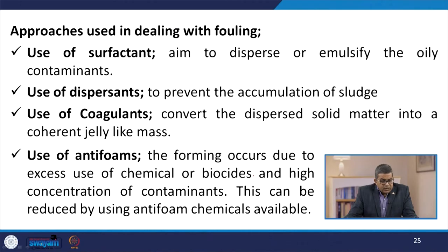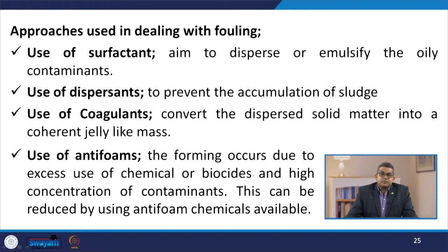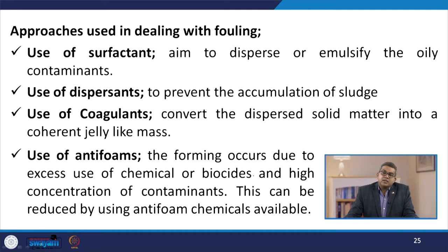There are various approaches to dealing with fouling. One may use surfactants — the aim is to disperse or emulsify oily contaminants. Another approach is the use of dispersants to prevent the accumulation of different types of sludge. Then there is the use of coagulants, which may convert dispersed solid matter into a coherent jelly-like mass. Anti-foams may also be used — foaming occurs due to excess use of chemicals or biocides and high concentration of contaminants, and can be reduced using anti-foam chemicals.